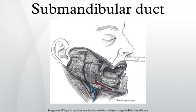The submandibular duct, or Wharton duct, or submaxillary duct, is one of the salivary excretory ducts. It is about 5 cm long, and its wall is much thinner than that of the parotid duct. It drains saliva from each bilateral submandibular gland and sublingual gland to the sublingual caruncle at the base of the tongue.